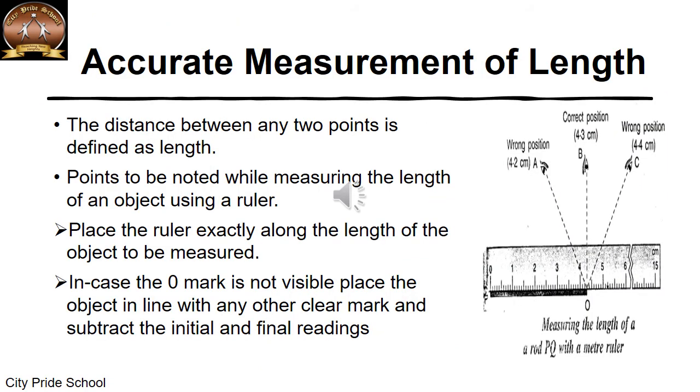Now we will see how we can measure length accurately. Length is the distance between any two points, which we term as length. It could be measured in different ways. But generally, in your notebook or small distances, we measure with a ruler. Now when you have to measure a line with a ruler, what are the things that you need to take care of? One is that the ruler should be placed exactly along the length of the object that has to be measured.